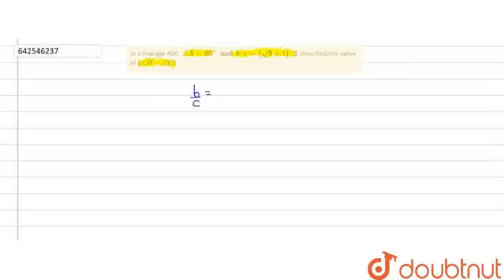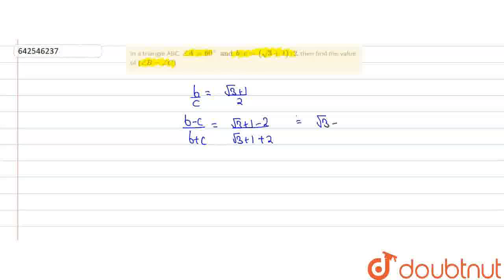So, we will start this question by writing b:c = (√3 + 1)/2. Now, by using the componendo and dividendo theorem, we will get (b - c)/(b + c) = (√3 + 1 - 2)/(√3 + 1 + 2), which gives us (√3 - 1)/(√3 + 3), which further gives us (√3 - 1)/(√3 + 1), taking (1/√3) common.